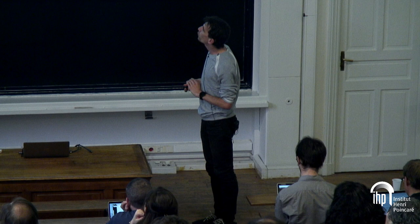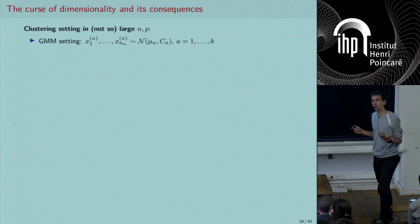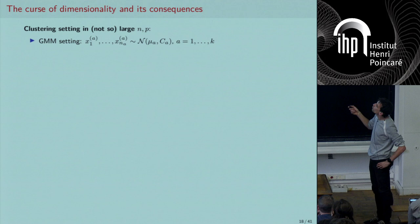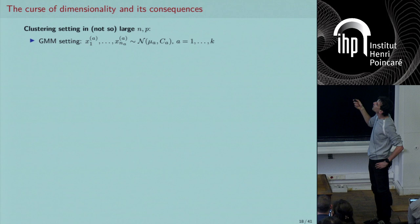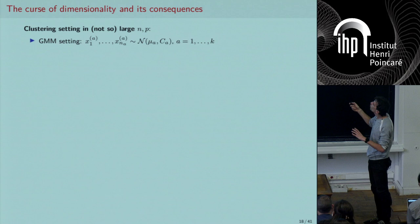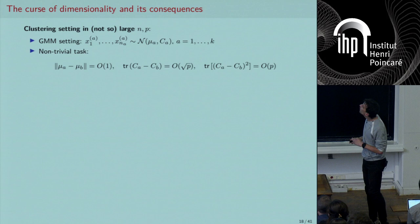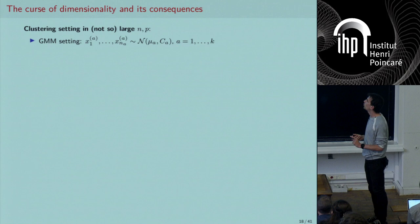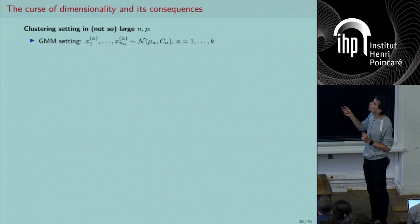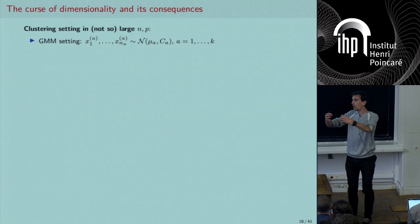Take spectral clustering as an example. In a Gaussian mixture model setting, I have observations X_1 through X_{n_A} from class A, Gaussian with mean μ_A and covariance C_A, for A from 1 to K. The size P of the data is increasing at the same rate as N. Since P is increasing, μ_A and C_A are P-dimensional objects that move with P.